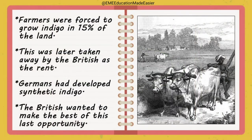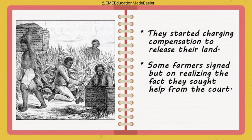In Champaran, tenants were compelled to grow indigo in 15% of their land, and this crop was taken by the British as rent. By this time, Germans had developed synthetic indigo. The British landowners knew they could no longer continue making profits from indigo, so in an attempt to squeeze out the last profit, they began charging compensation for releasing farmers from the arrangement of this forceful planting of indigo. Some peasants had signed the agreement unaware of synthetic indigo. When farmers came to know about synthetic indigo, they sought legal recourse to retrieve the compensation money.